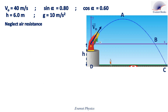A cannonball is fired from the origin O with an initial velocity which makes an angle alpha with the horizontal. The magnitude of the initial velocity is 40 meters per second, and the origin O is 6 meters above the ground. Given that sine alpha equals 0.8 and cosine alpha equals 0.6, and g equals 10 meters per second squared.